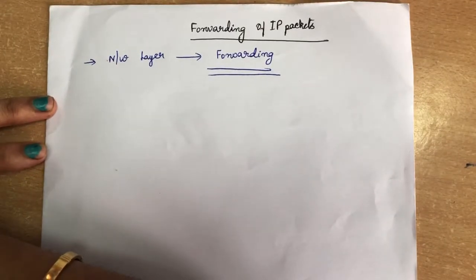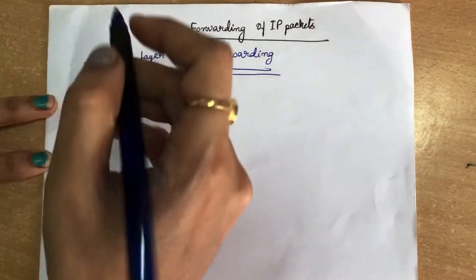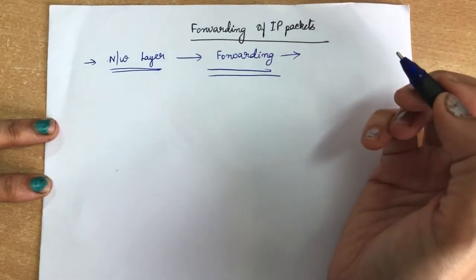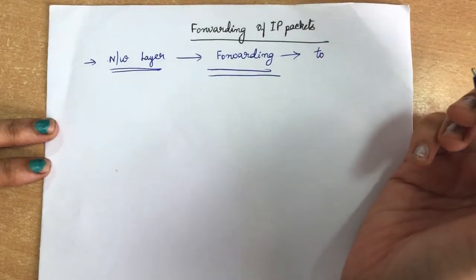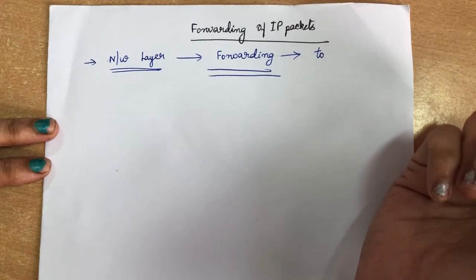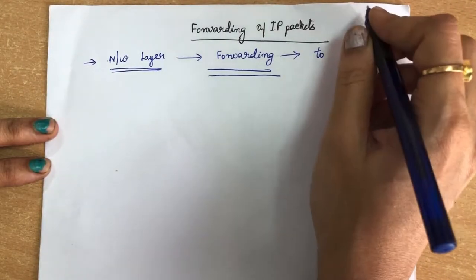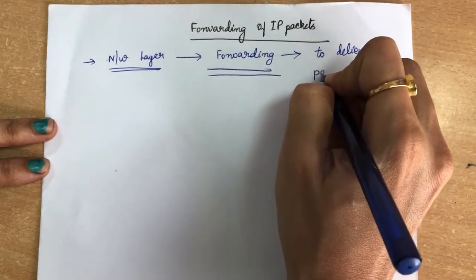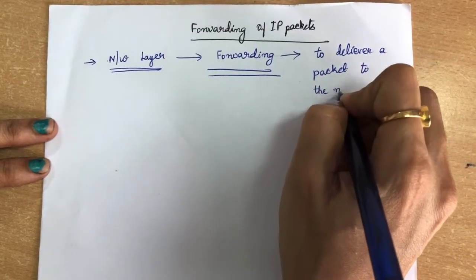Today we are going to see a new topic: forwarding of IP packets. The main function of the network layer is forwarding. Forwarding means to deliver the packet to the next hop — that is, it can be a final destination or an intermediate connecting device.